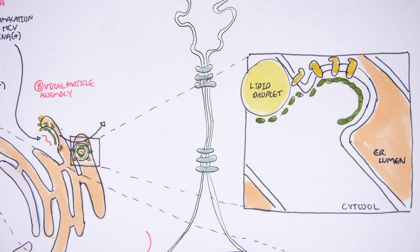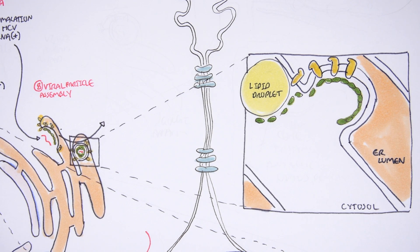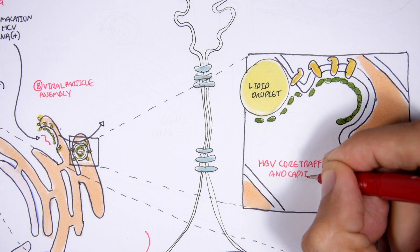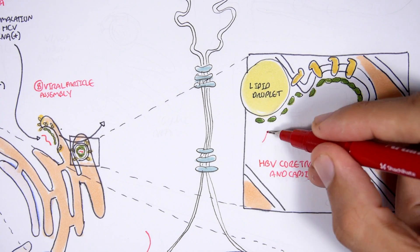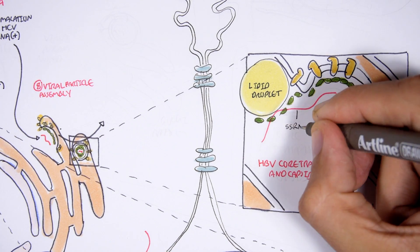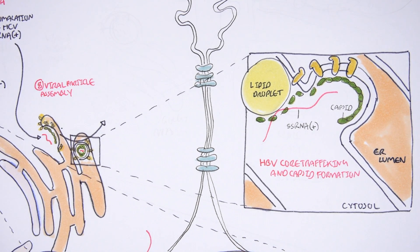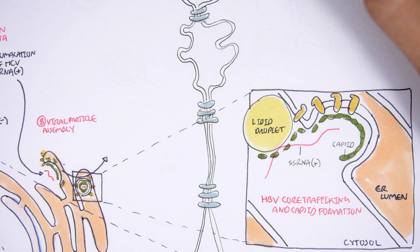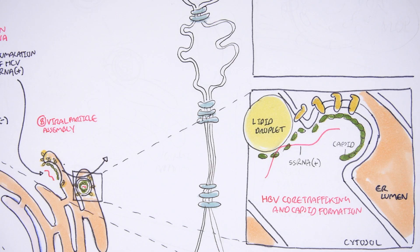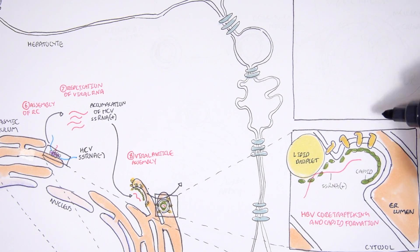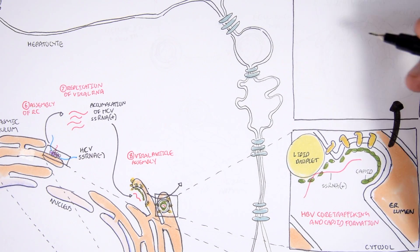What we are seeing here is hepatitis C virus core trafficking and capsid formation. The positive single-stranded RNA is also directed into this viral particle that is being formed. From here, the hepatitis C viral particle will be transported to the Golgi apparatus, where it will be packaged up.